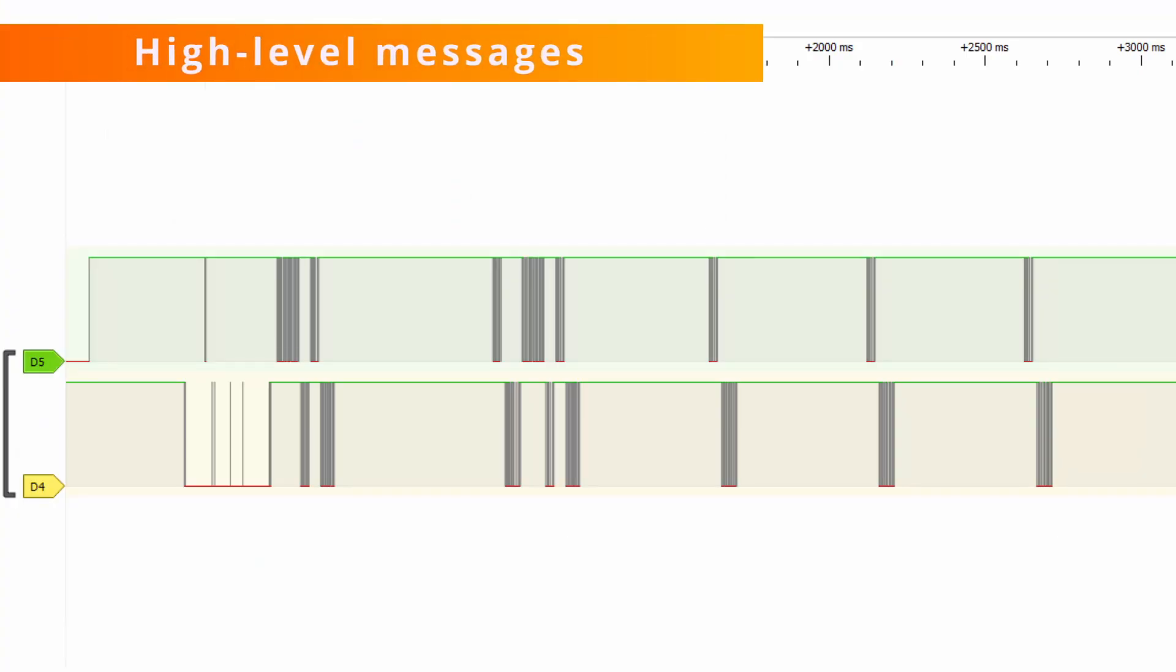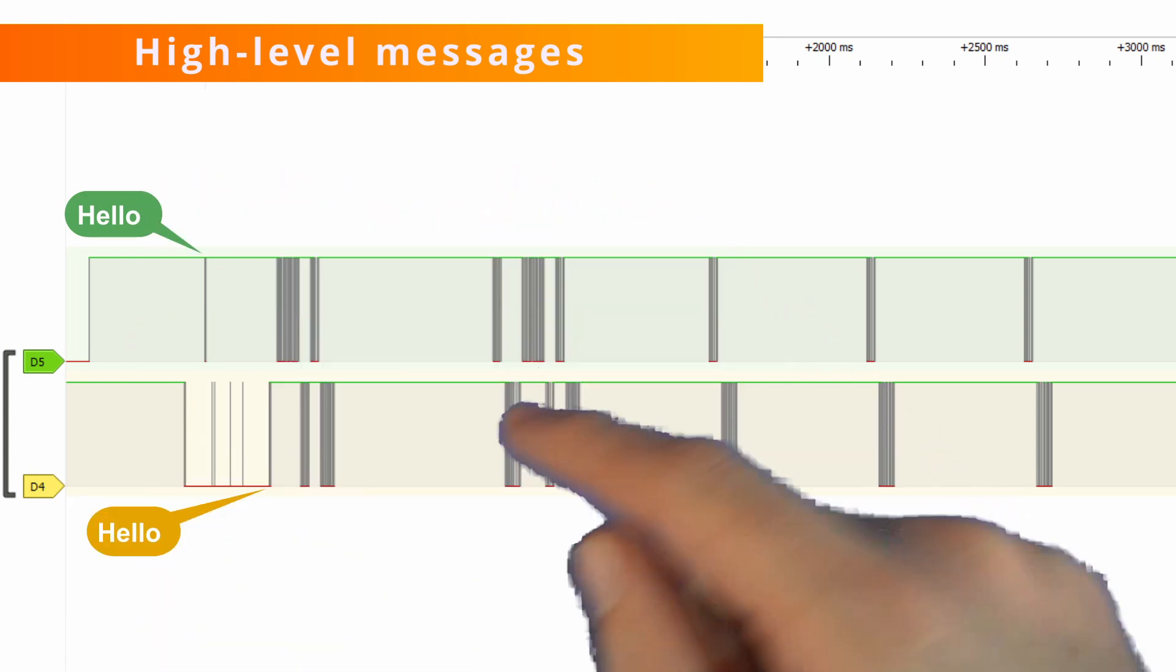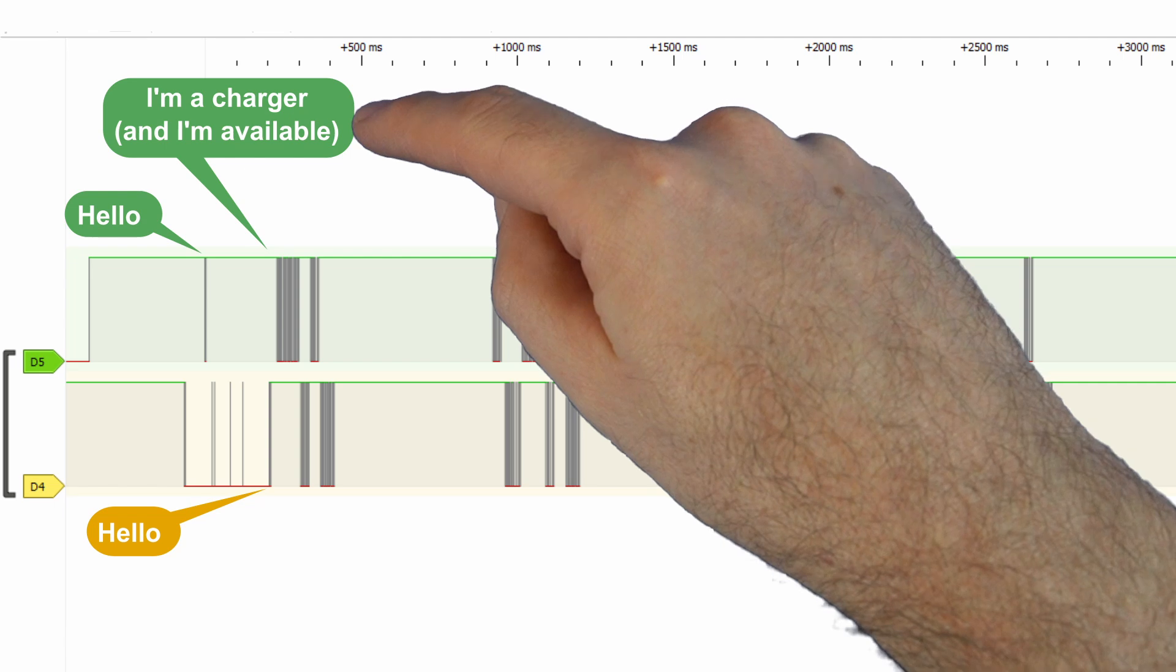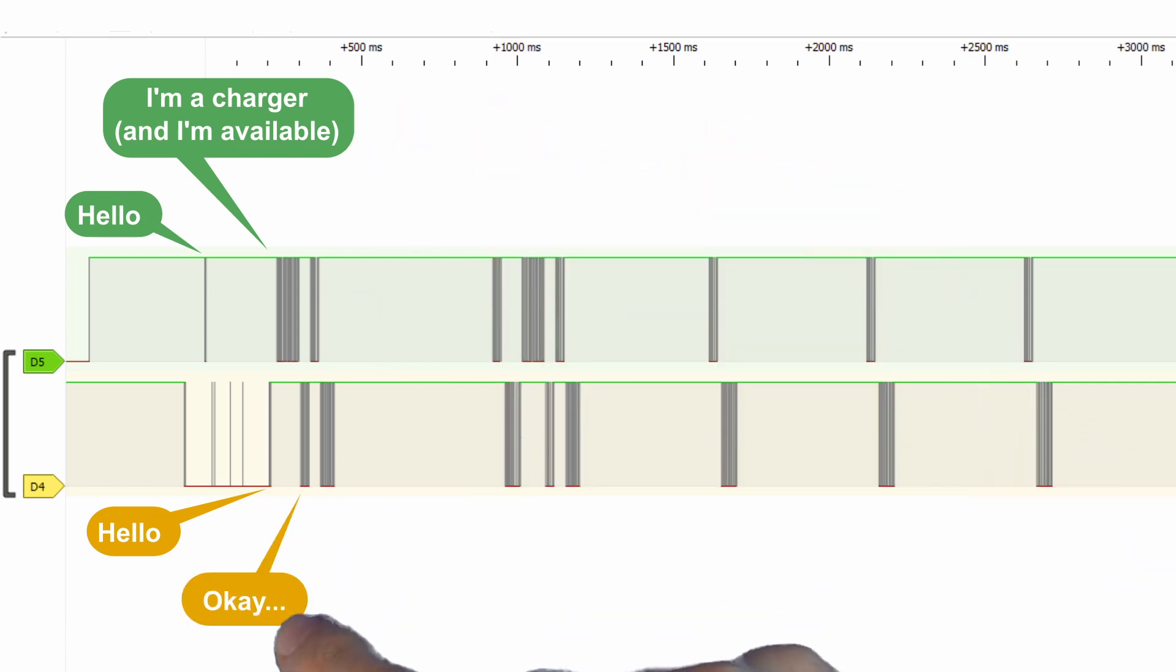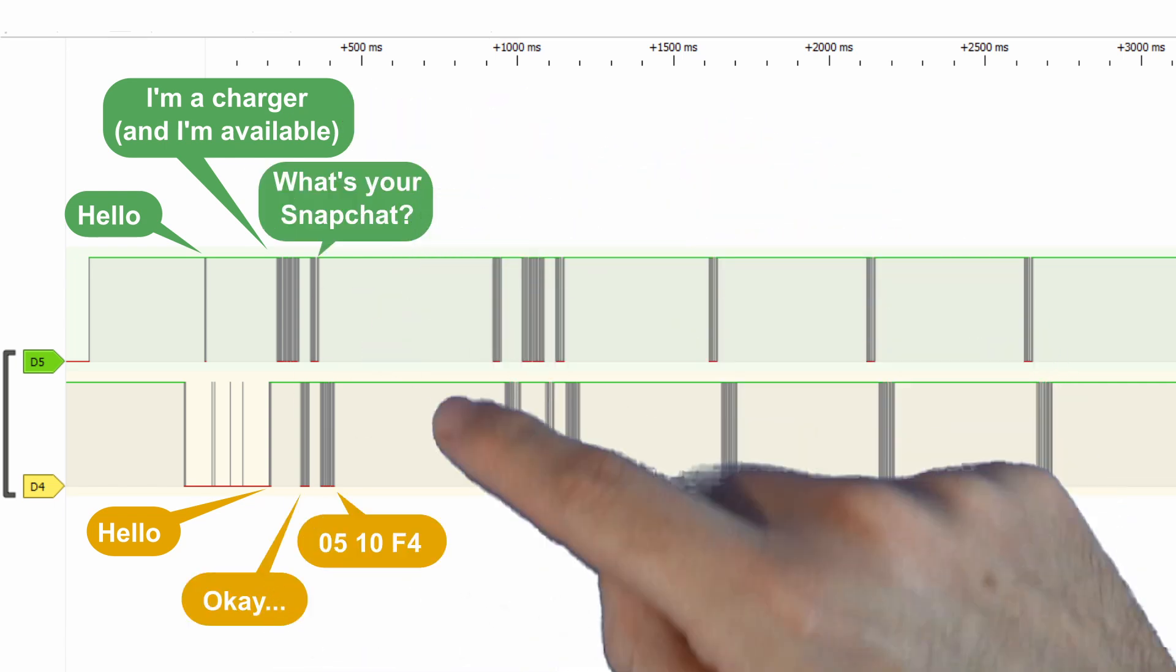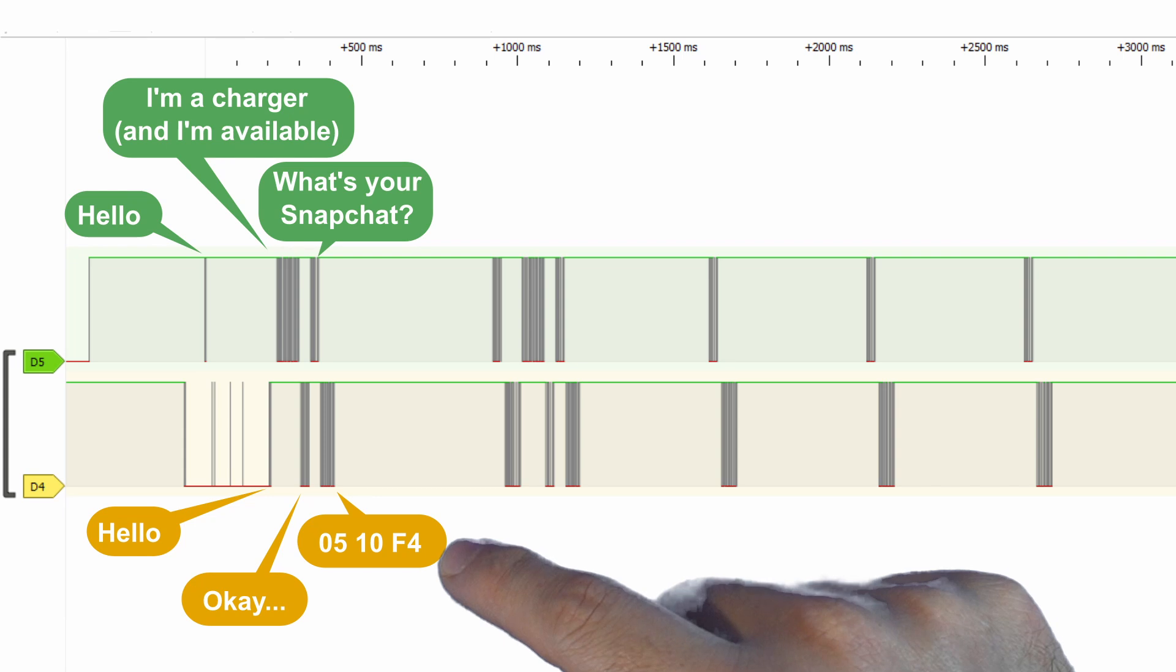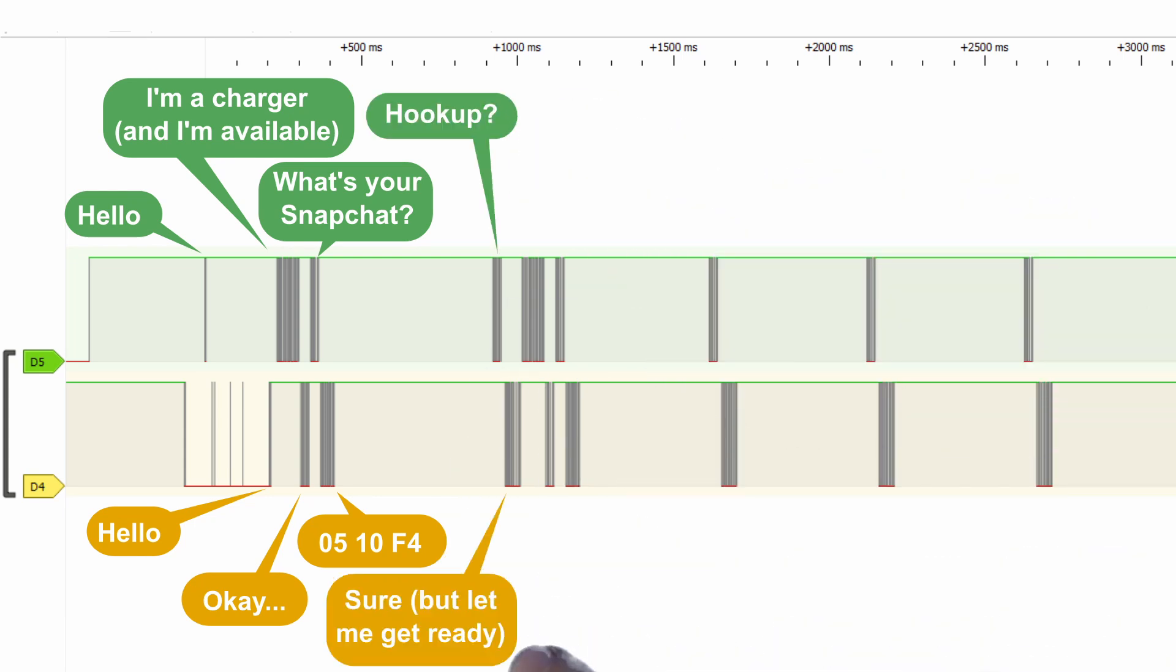There's only five different messages that I've found. First is a hello message which the battery repeats. This is followed by 'I'm a charger and I'm available.' 'Okay, watch your snapchat 0510F4.' 'Hook up?' 'Sure, but let me get ready.'